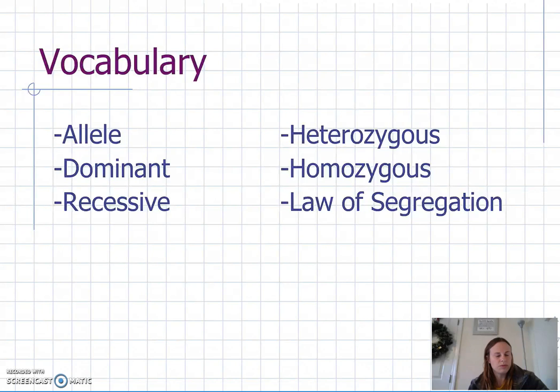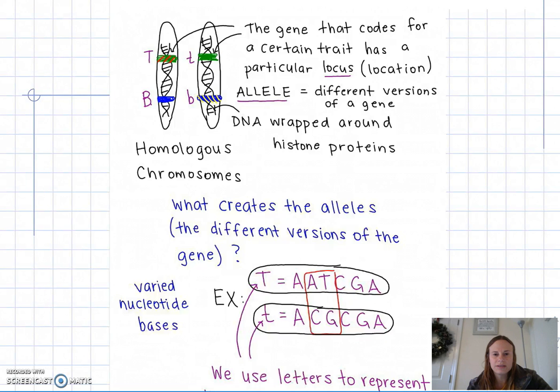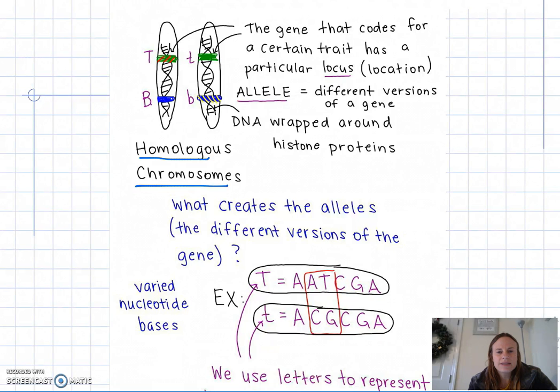Before we jump into Mendelian Genetics, let's revisit some important vocabulary words from last unit. We have homologous chromosomes, and within your chromosomes you have DNA. DNA contains hundreds to thousands of genes, where the gene that codes for a certain trait has a particular locus, or location.